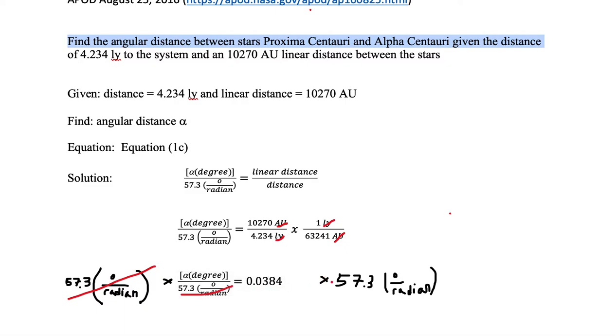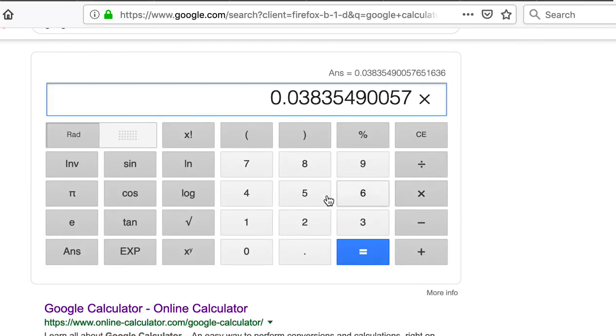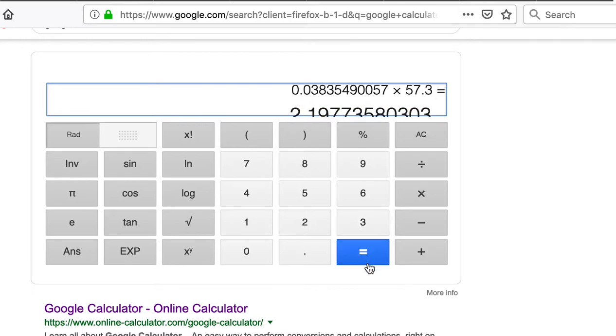So we're going to multiply this by 57.3. And our answer is 2.19 with a whole bunch of numbers. Notice that 97 is well above 50 so we're going to round this one up to two. We're going to keep our answer to 2.2.